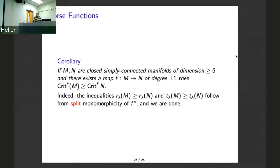Maybe I should also say that we can pose the analogous question not about Lusternik-Schnirelmann category but about topological complexity: if you have a map of degree one, what can be said about topological complexity? I believe that the analogous inequality is false, but I welcome anyone to find a counterexample. Because there are many things that hold for category but do not work for topological complexity. That's all I wanted to say.